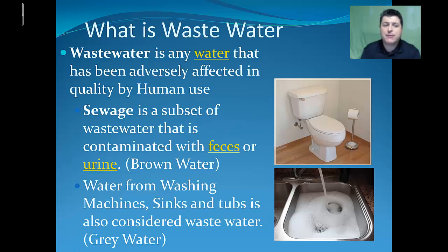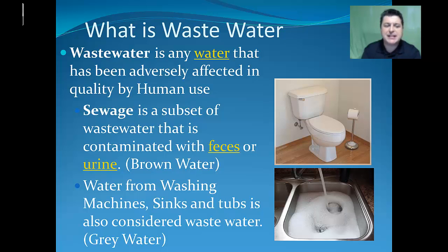Wastewater is any water that has been adversely affected in quality by human use. Sewage is a subset of wastewater contaminated with feces or urine, oftentimes referred to as brown water. Water from washing machines, sinks, and tubs is also considered wastewater, but because it doesn't have any biological contaminants, it's considered separate from raw sewage and is referred to as gray water.